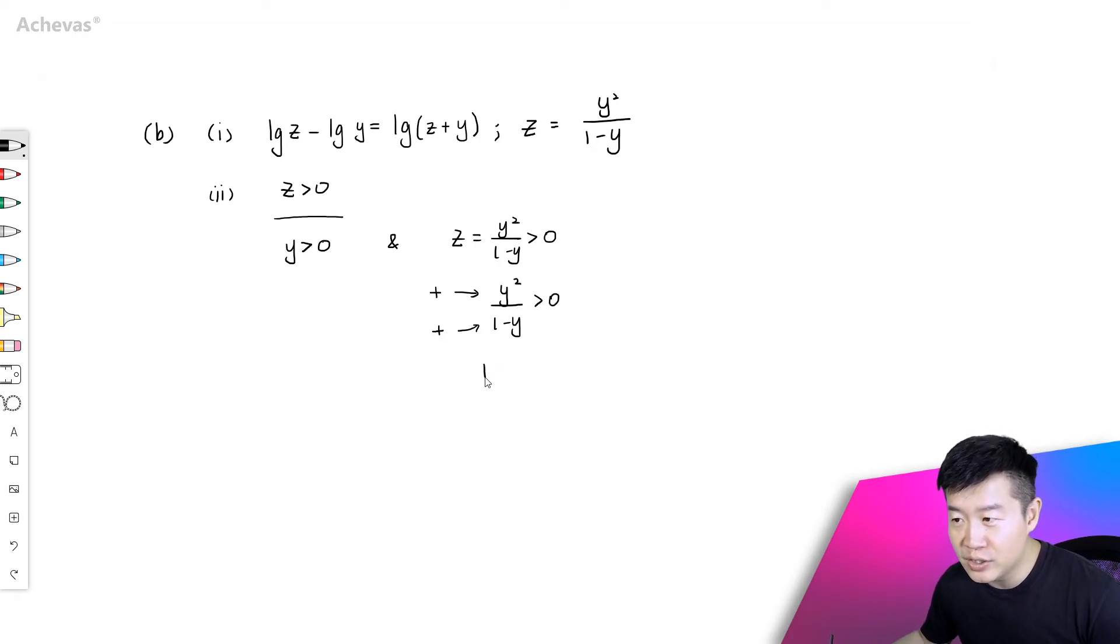So with this deduction, we know that 1 minus y must be bigger than 0, a positive number, which means that y must be less than 1.